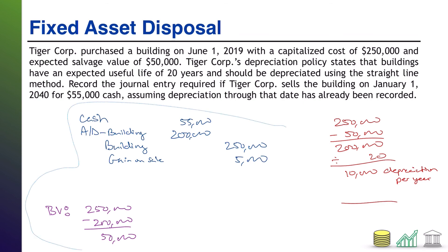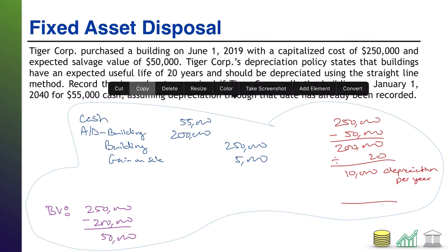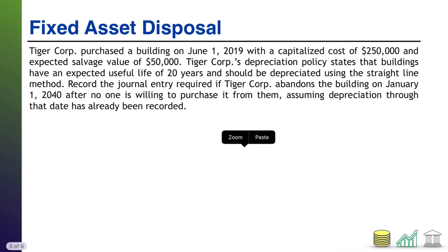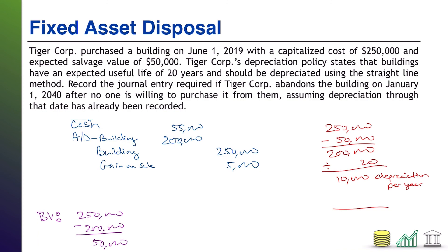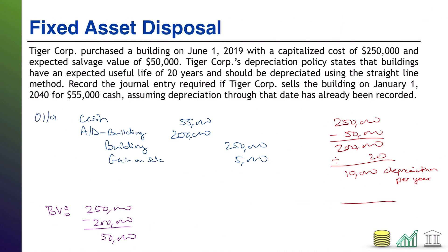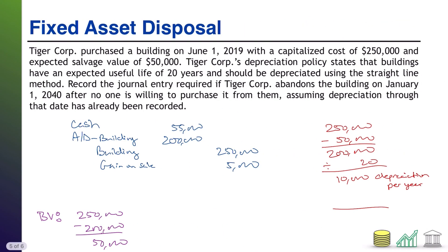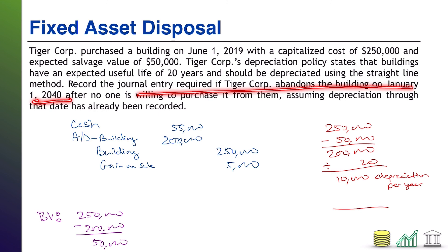I'll copy this over for our final question, which will be similar in nature and shouldn't require too much extra work. By the way, the date on that last one was January 1, 2040. Same information set with one tweak: it's still January 1, 2040, but in this case no one offered to buy the building and we are choosing to abandon it. What would change as a result of simply abandoning the building? Pause the video and figure it out.